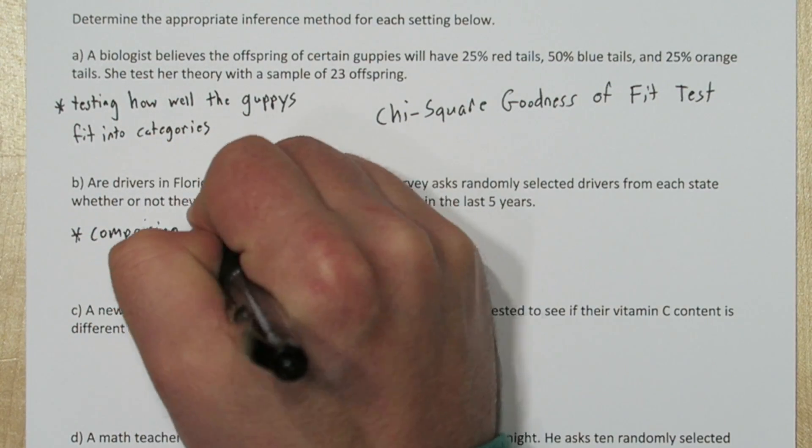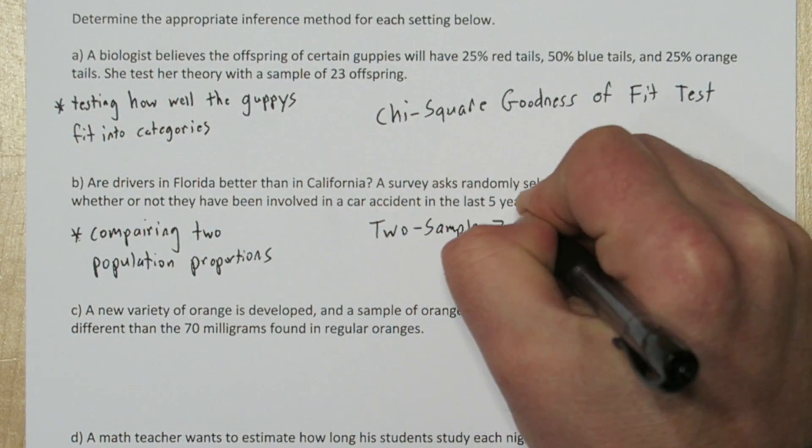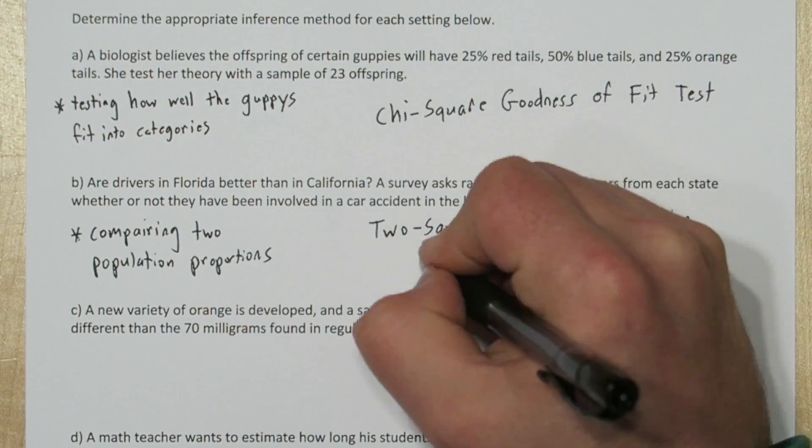On the next one, we're comparing two population proportions. So this is a two-sample z-test for population proportions.